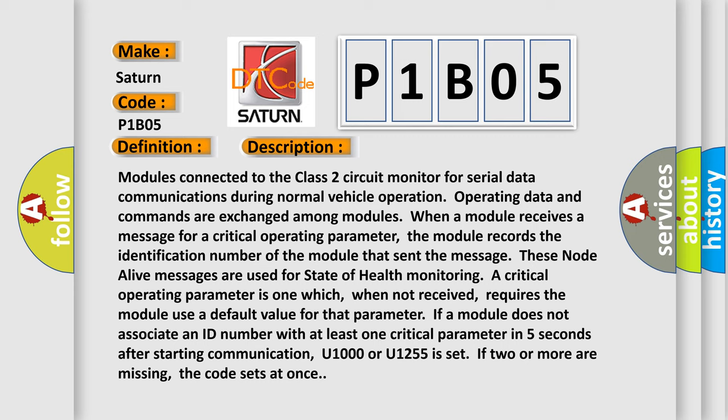A critical operating parameter is one which, when not received, requires the module to use a default value for that parameter. If a module does not associate an ID number with at least one critical parameter within five seconds after starting communication, U1000 or U1255 is set. If two or more are missing, the code sets at once.